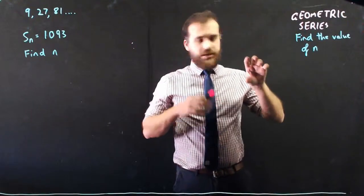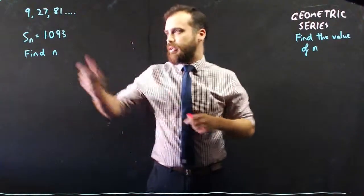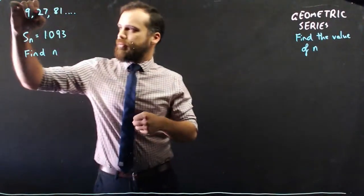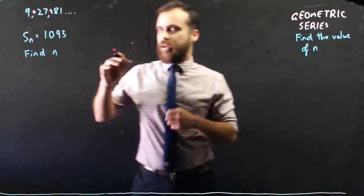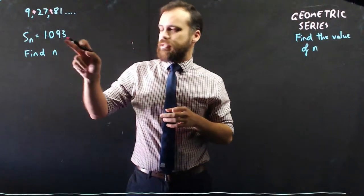Alright, so geometric series again. This time we're going to find the value of n. So the question might be something like 9, 27, 81. This is a geometric sequence. If we add them all together, how many terms will we have to add together to get 1,093?